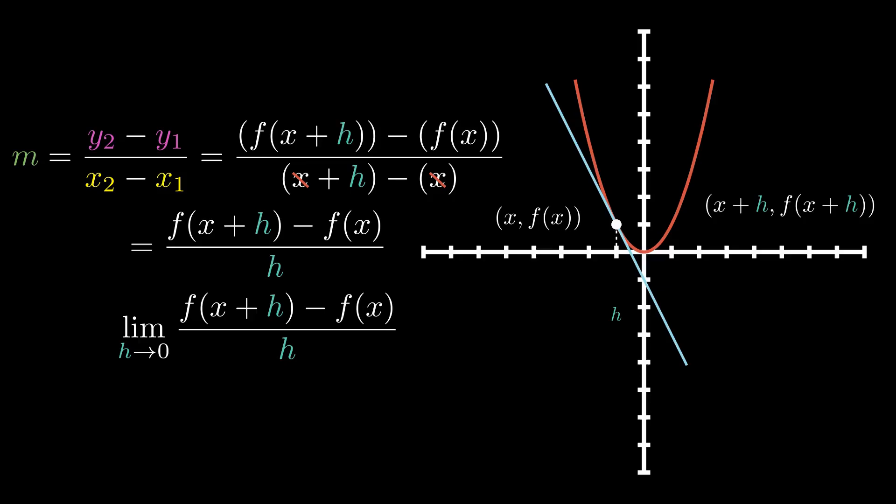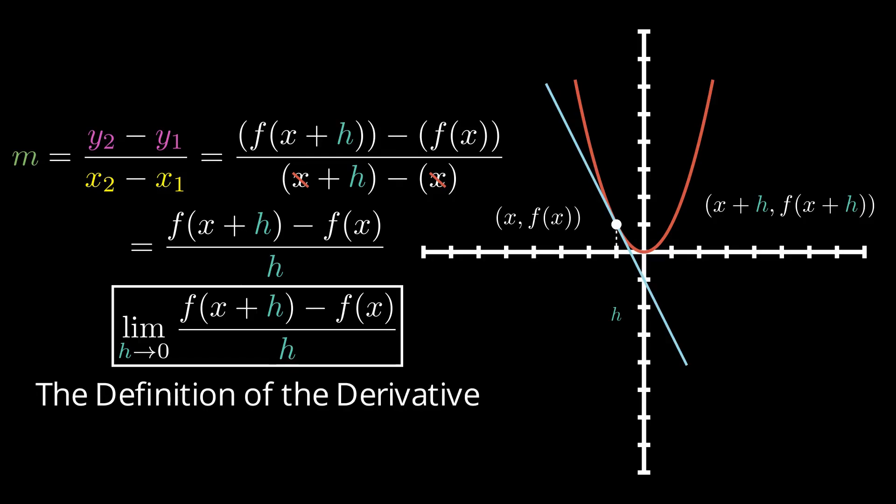Essentially, we want h to get very, very close to zero. And by doing this, it almost allows us to pinpoint what the slope is at this particular point. And that is how we find the derivative. This definition is why it defines how we find the derivative — and as you know, this is known as the definition of the derivative.